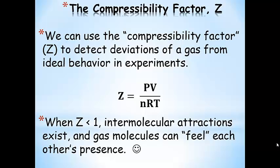If we want to detect deviations of a gas from ideal behavior, we can use something called the compressibility factor Z. It looks a lot like the ideal gas law: Z = PV / nRT. When Z is less than 1, then intermolecular attractions exist — gas molecules can feel each other's presence, and there is potential energy in the picture.